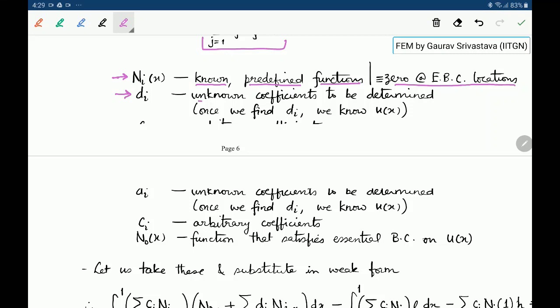Dᵢ are the unknown coefficients which are to be determined. So if we are able to find out Dᵢ, we will be able to find out U of X.